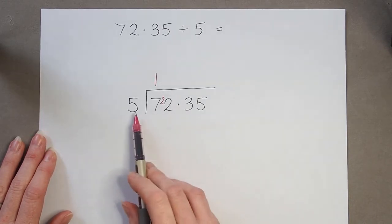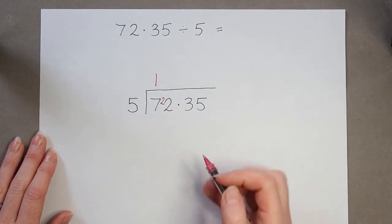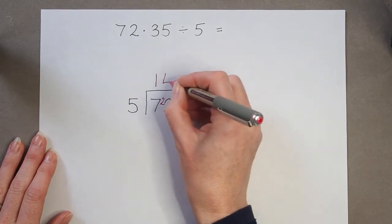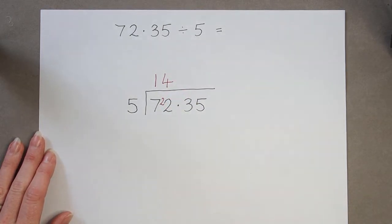Twenty-two divided by five, that's four. And because four fives are twenty, that means I've got a remainder of two.